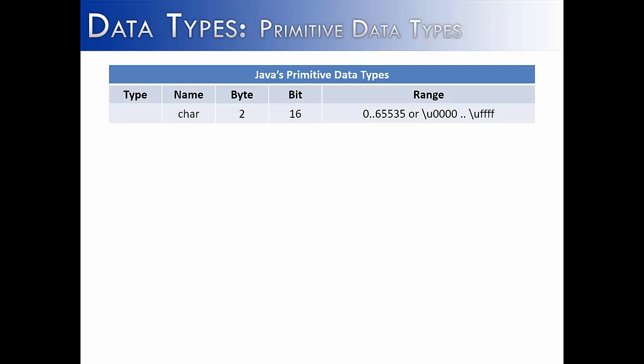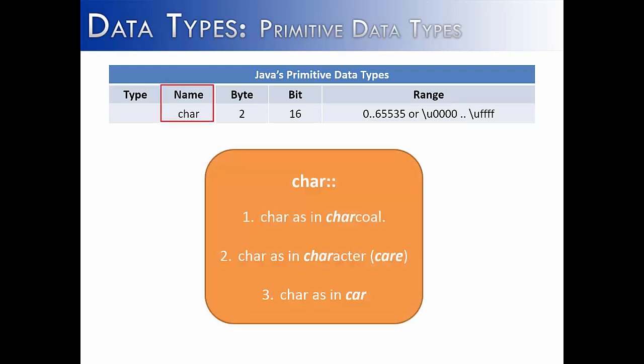Before we can really even talk about the character data type, we have to talk about how you pronounce the name of the character data type. If you were typing it into a programming environment, you would not say the word character, you would use C-H-A-R. And there's three possible ways to say this: char as in charcoal, care as in character. And this one is very popular because the primitive data type is character.